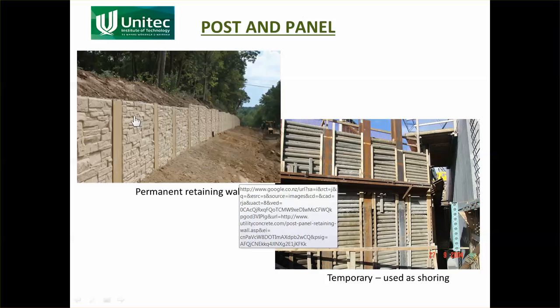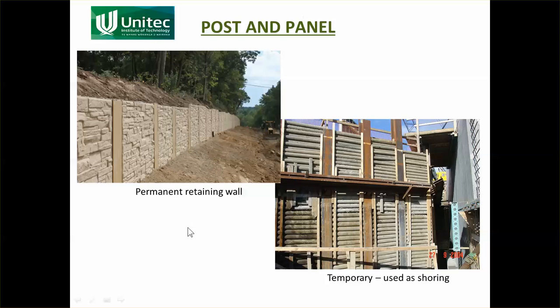Post and panel walls use posts that can be driven into the ground before excavation commences, with panels inserted as you go down. In this example, the ground surface was at the top of the wall; H-piles were driven and then pole rails were added progressively as excavation proceeded, continually supporting the wall. In this case the post and panel system was used as shoring.